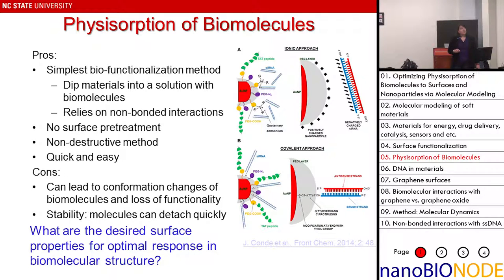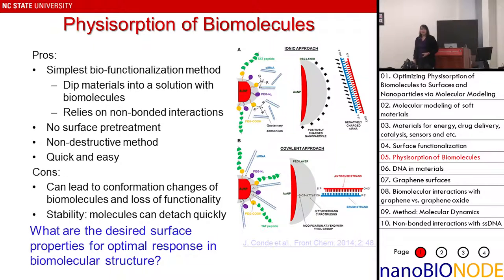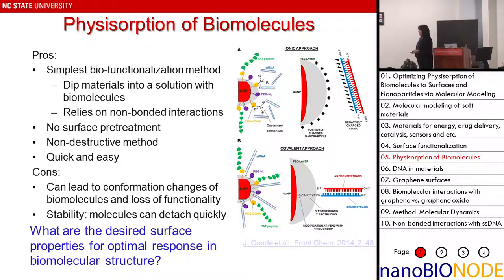For example, a PEG layer on a gold surface can be charged — end groups are protonated amines — and negatively charged siRNA can adsorb on this surface. However, there are problems associated with that: whether we're going to retain the base pairs, retain the structures, and what should be the optimal surface charge density that allows us to retain the properties of biomolecules. Not retaining the properties of biomolecules may lead to their degradation.